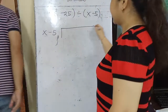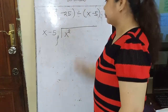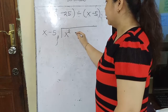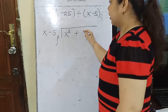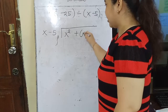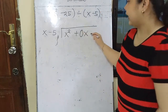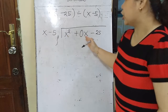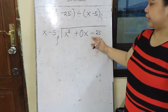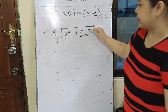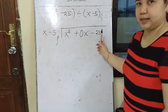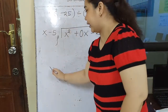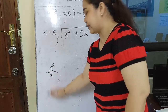So we need to add a placeholder: x² plus 0x minus 25. The degrees must be in consecutive order. This is degree 2, then the invisible degree 1 term with coefficient 0, then the constant. Now let's divide: x² divided by x gives x. Subtract the exponents: 2 minus 1 equals x. x times x is x squared, and x times negative 5 is negative 5x.